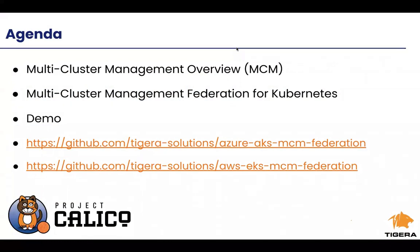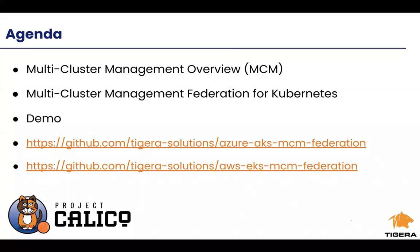Today's agenda: we're going to go over multi-cluster management with an overview. There are three main key pieces: the ability to manage multiple Kubernetes clusters through a single pane of glass, giving you visibility and traceability from a single UI. Calico Enterprise also has functionality to extend label-based policy management across multiple clusters, and built on top of federated endpoint identity, we have the ability to federate services so you can have services that span multiple clusters.